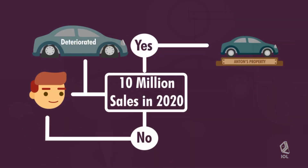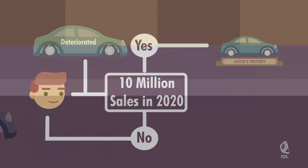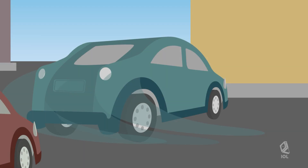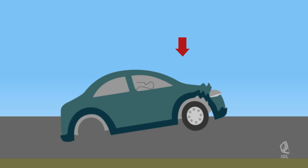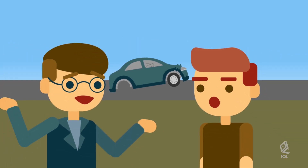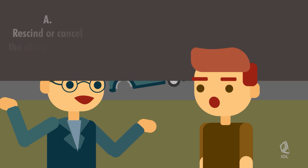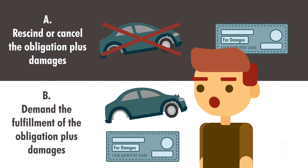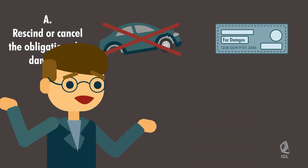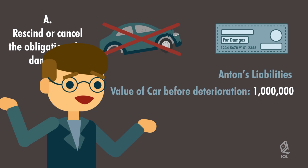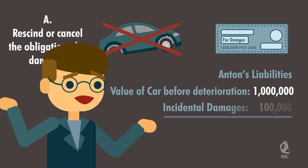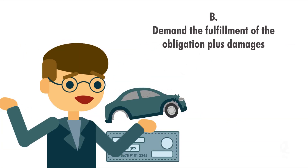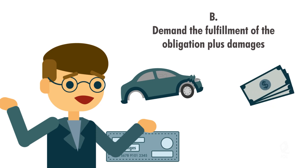However, if the deterioration is with Antin's fault — such that before delivery, Antin was reckless in driving, causing the car to bump into a wall, badly damaging the car and reducing its value from 1 million pesos to 900,000 pesos — then Henry has the option upon fulfillment of the condition either to rescind or cancel the obligation plus damages, or to demand the fulfillment of the obligation plus damages. In the first option, Antin shall be liable for the value of the car before its deterioration, which is 1 million pesos plus incidental damages. In the second option, Antin is bound to give Henry the car and pay the impairment suffered by Henry amounting to 100,000 pesos plus incidental damages.